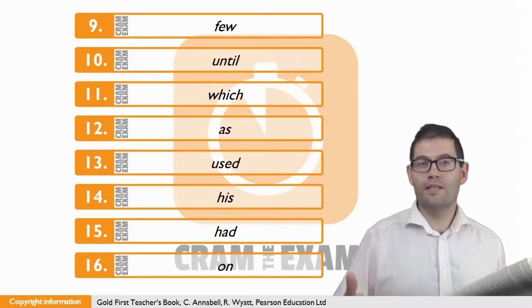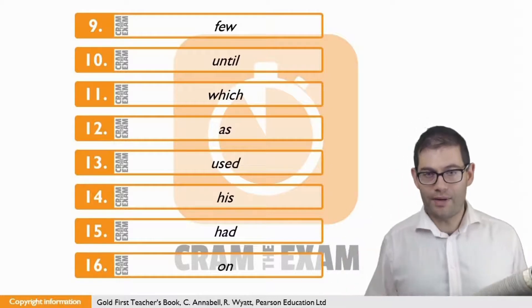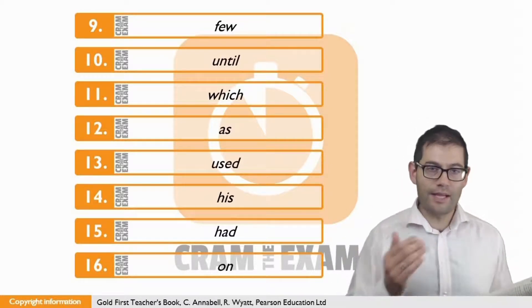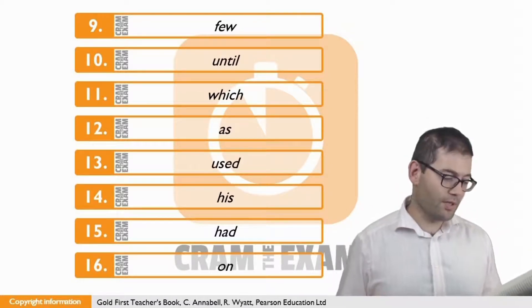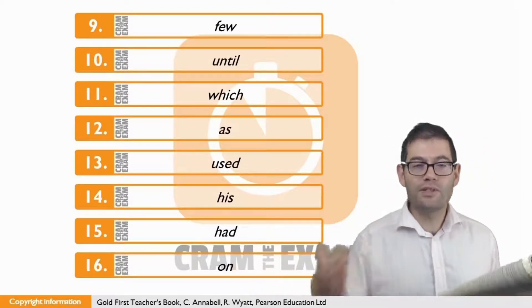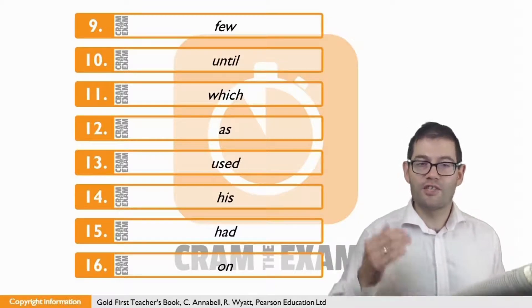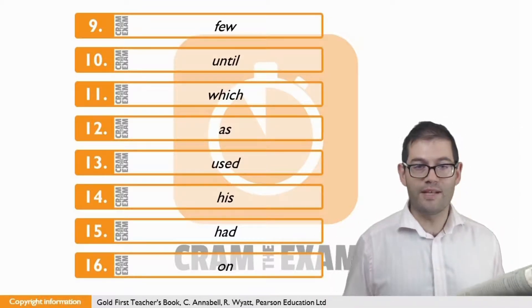For question thirteen, we're discussing what it is that he did in the past. He was a breakdancer. Given the language structure that we're presented with here, which is 'he' to be a breakdancer, what is the word that we need? The answer is used. He used to be a breakdancer.